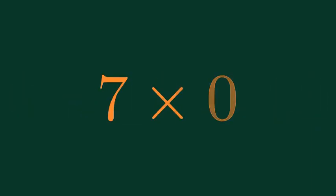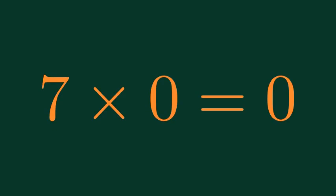What is 7 times 0? 7 times 0 is equal to 0.